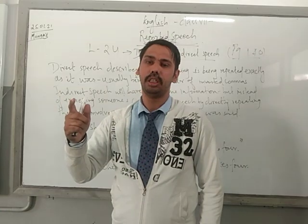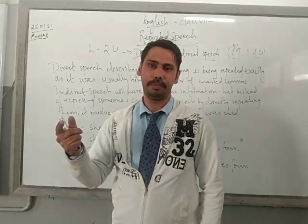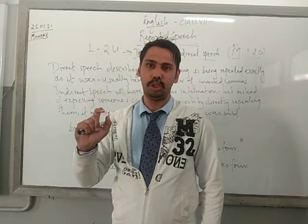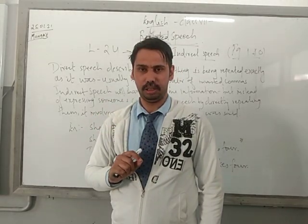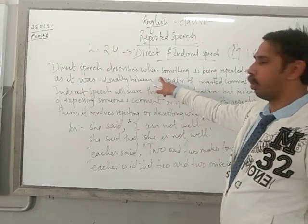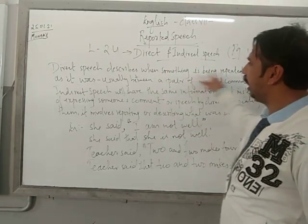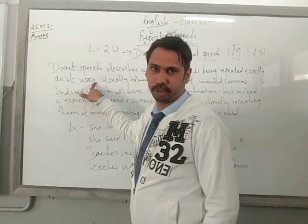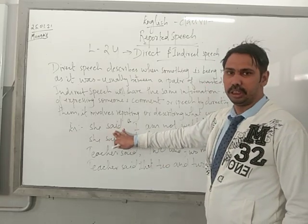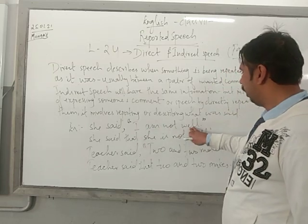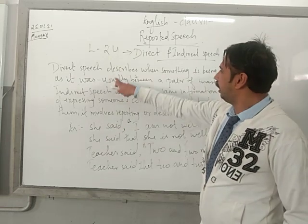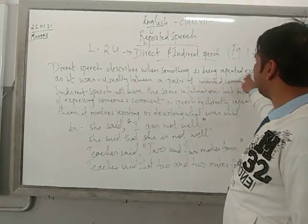When we change the statement into indirect, the inverted commas are removed and we use the word 'that' in the sentence. Direct speech describes when something is being repeated exactly as it was said by the speaker. Here you can see the example: she said, 'I am not well.' So 'I am not well' is the statement of the speaker.